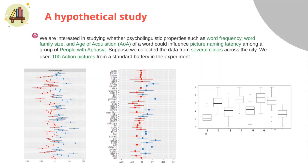Let's see how LME models could be useful by talking about a hypothetical study, which I'll refer to throughout the presentation. This is a study where we're interested in whether psycholinguistic properties such as word frequency, word family size, and age of acquisition of a word could influence naming latency among a group of people with aphasia. We collect data from several clinics across Hong Kong, using a hundred action pictures from a standard battery.